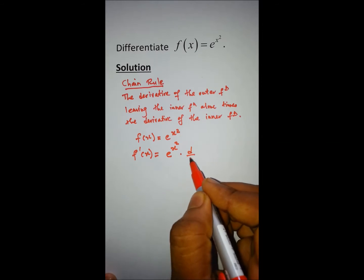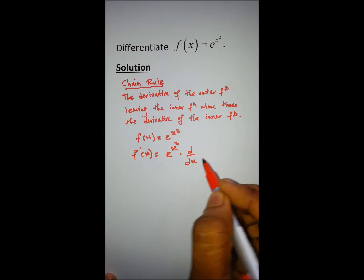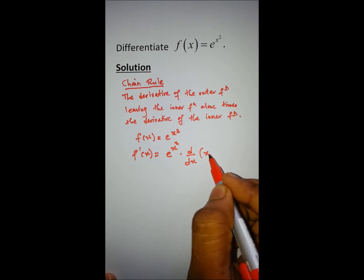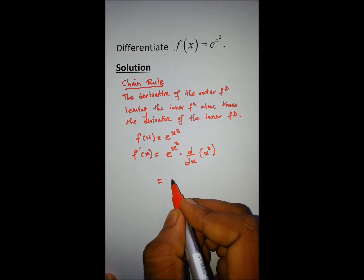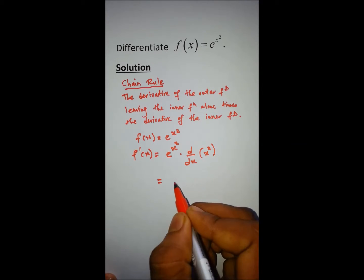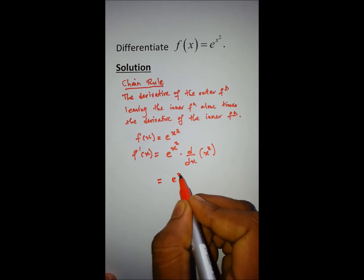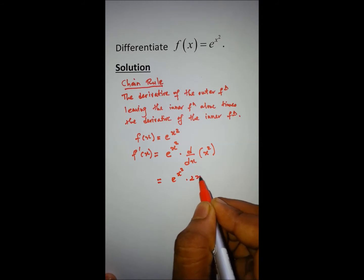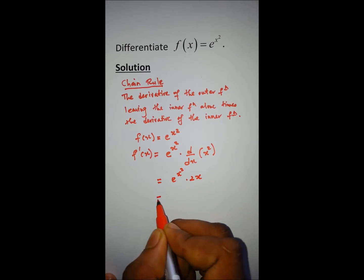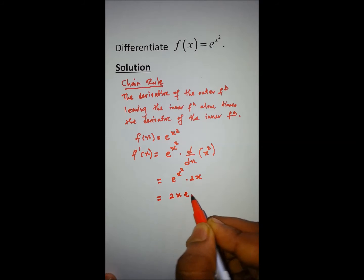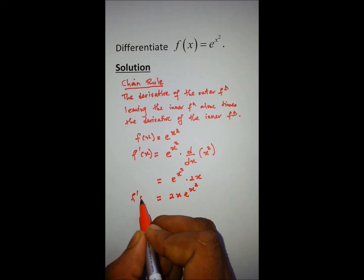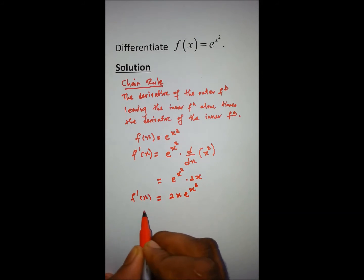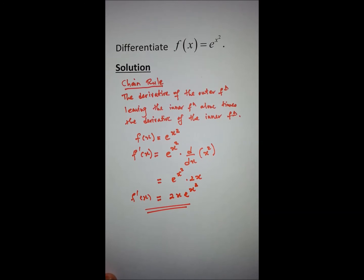We now differentiate the inner function x², which gives us 2x. So the result is e^(x²) × 2x, which is the same as 2x·e^(x²). That is the derivative for this function.